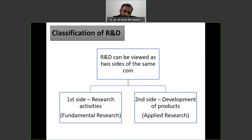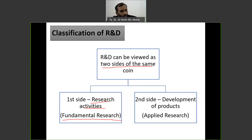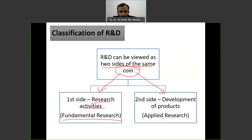In terms of classification, R&D can be viewed as two sides of the same coin. The first side is research activities — we call it fundamental research, which explores to determine new compounds and new methods; it's basic research. The second side of the coin is development of products, which is applied research. So the two classifications of R&D are fundamental research and applied research.